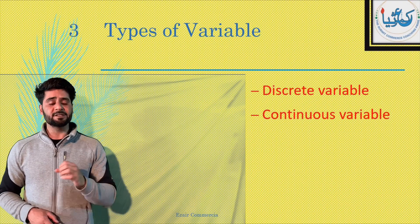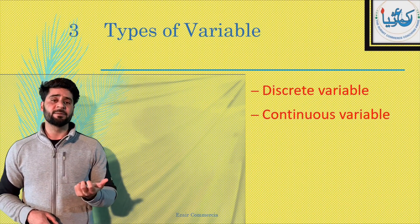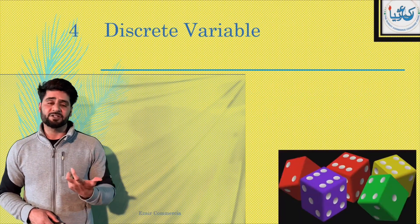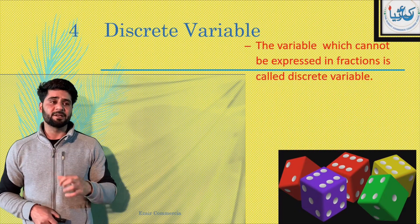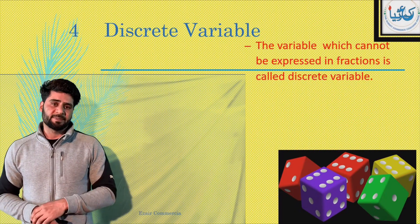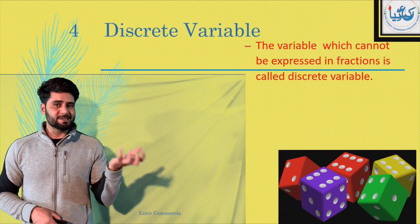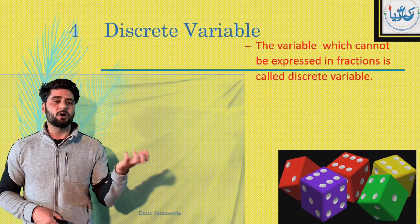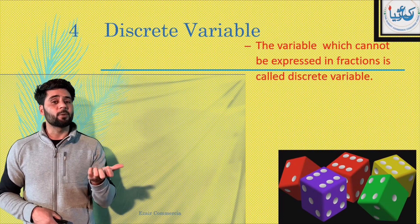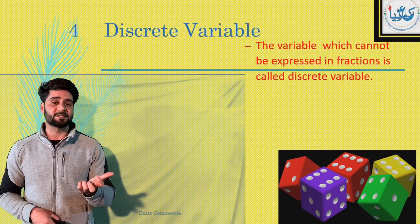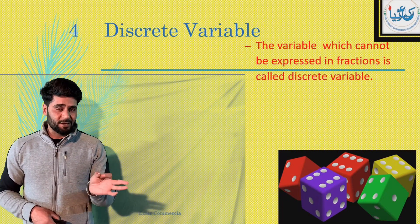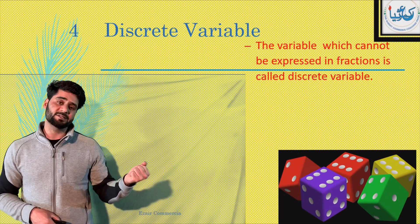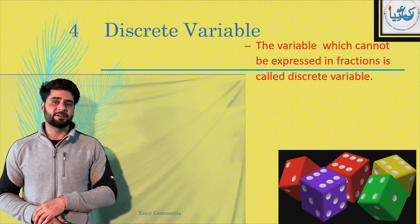So what is a discrete variable? Discrete variable wo variable hota hai joh hum fractions mein express nahi kar sakti hai. A variable which can't be expressed in fractions is called a discrete variable. For example, mere paas 5 employees hai — 5 is exact, yeh decimals mein nahi hai. I may have 10 pens or 20 pens, but I can't have 20.1 or 20.5 pens. A variable which can't be expressed in fractions is called a discrete variable.